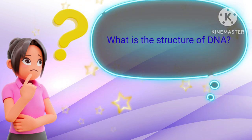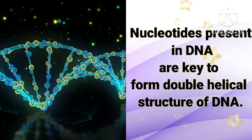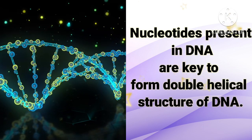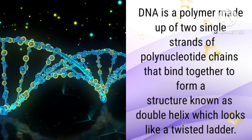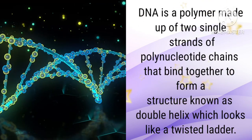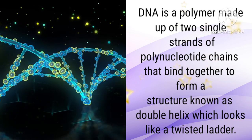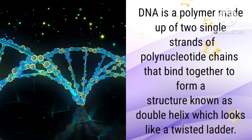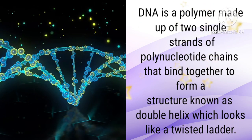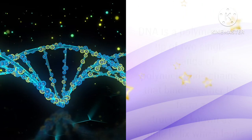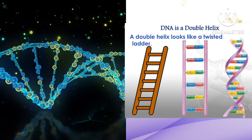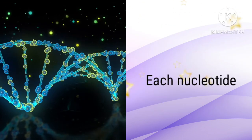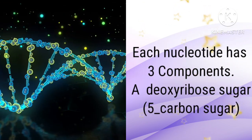So what is the structure of DNA? The nucleotides which are present in the DNA are key to form the double helical structure of DNA. DNA is a polymer which is made up of two single strands of polynucleotide chains that bind together to form a twisted ladder-like structure.